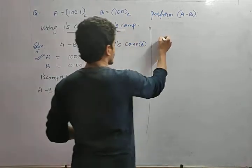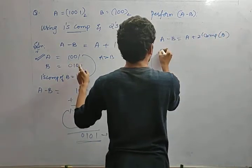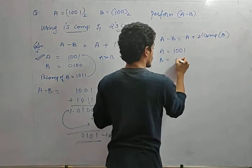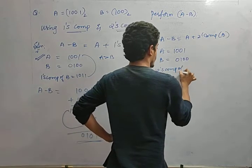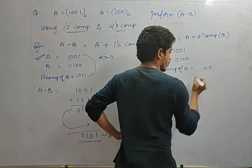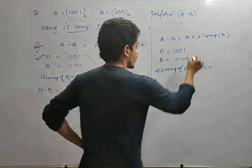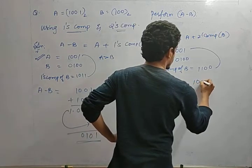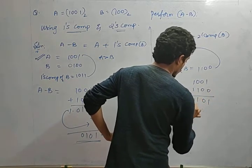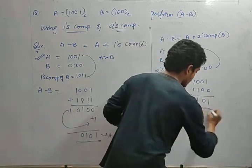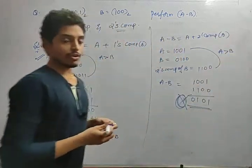Using 2s complement: A minus B = A plus 2s complement of B. A = 1001, B = 0100. The 2s complement of B: keeping digits until the first non-zero, then inverting — gives 1100. Adding 1001 plus 1100: 1 plus 1 is 0 carry 1, producing an end carry. In 2s complement we discard the carry. Final answer is 0101. Since carry is produced, A is greater than B, confirming the result.